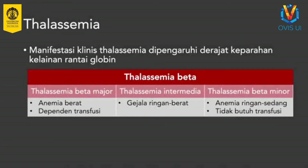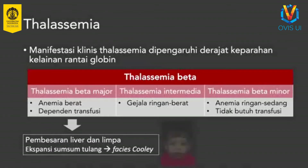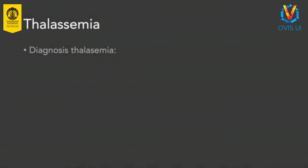Defek tiga alel rantai alpha menyebabkan penyakit HbH yang ditandai dengan anemia ringan sampai sedang. Defek satu sampai dua alel rantai alpha menyebabkan sifat thalassemia yang bisa tanpa gejala atau disertai anemia ringan. Thalassemia beta dapat dibedakan menjadi thalassemia mayor, minor, dan intermedia. Thalassemia mayor umumnya menunjukkan gejala anemia sejak usia kanak-kanak. Sementara thalassemia minor biasanya bersifat asimptomatik atau hanya menunjukkan anemia ringan. Thalassemia intermedia menunjukkan manifestasi yang beragam dari ringan hingga berat. Adanya kecurigaan terhadap thalassemia perlu dievaluasi lebih lanjut dengan pemeriksaan elektroforesis Hb atau analisa Hb.